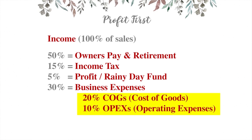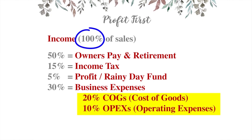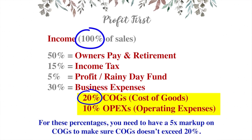If you want to give twenty percent towards cost of goods, here's a super simple math equation to figure out how much to mark up your products to guarantee profitability. Take one hundred and divide it by your cost of goods percentage — so one hundred divided by twenty — and that gives us five. You need a five-time markup on your cost of goods to make sure it doesn't exceed twenty percent.